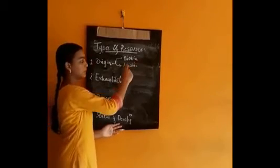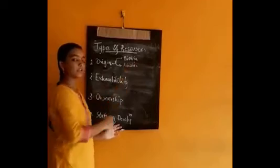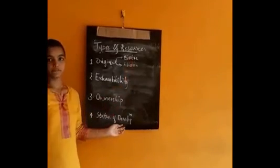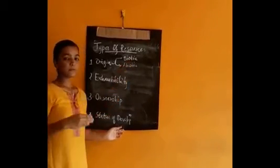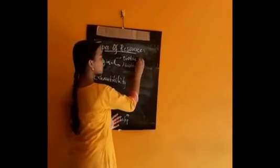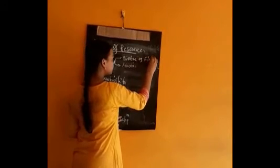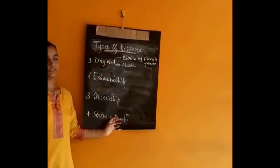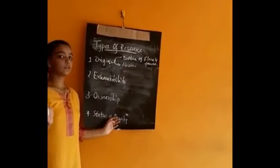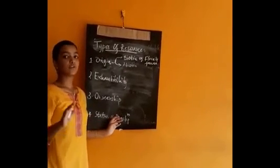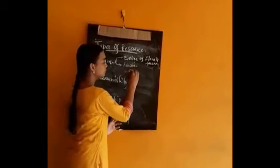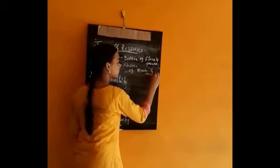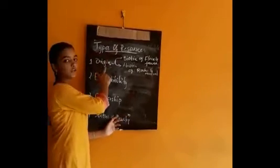Biotic resources are the resources which are obtained from the biosphere and those have life. For example, flora and fauna — that is plants and animals. Abiotic resources are all those which are composed of non-living materials. For example, rocks and minerals. This is the first type, that is on the basis of Origin.